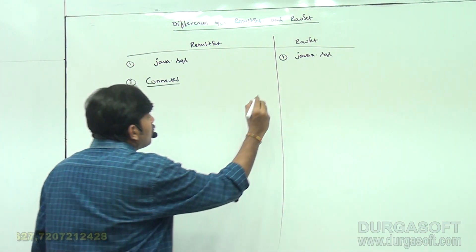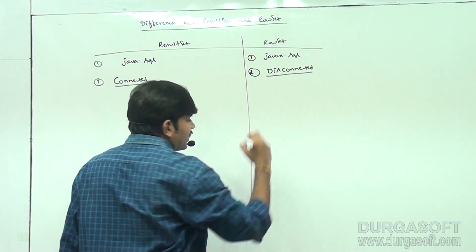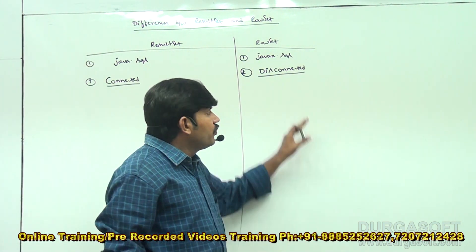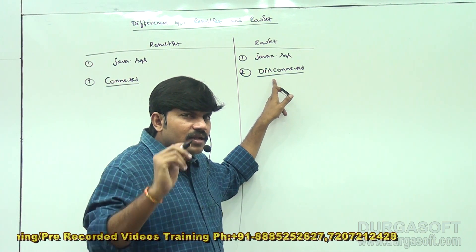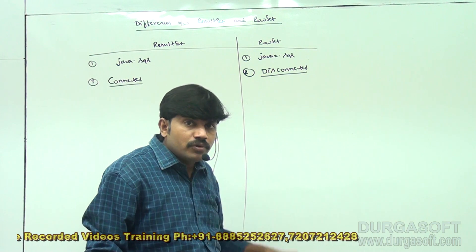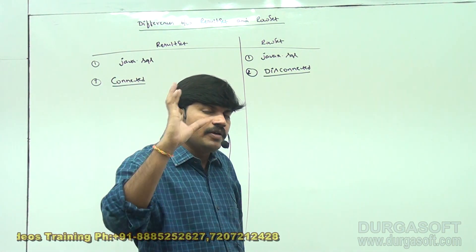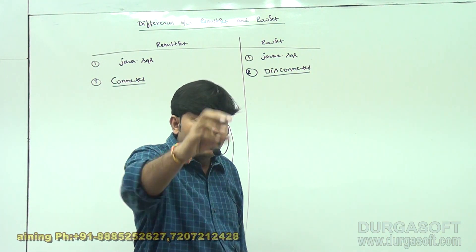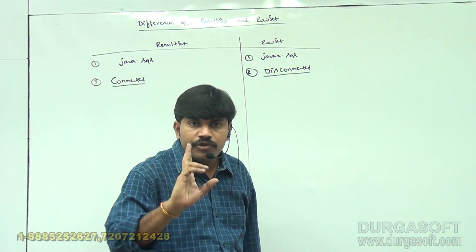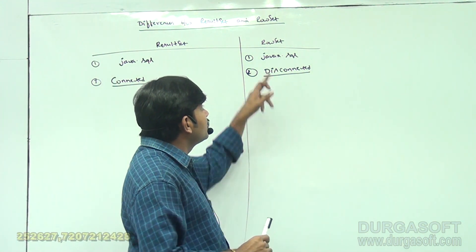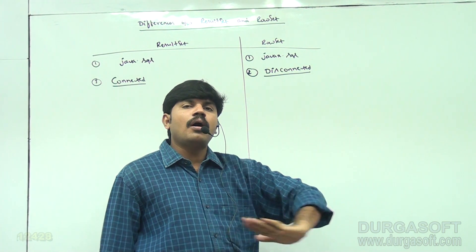By default, RowSet is disconnected. Without having a database connection, you are happily allowed to use RowSet. However, almost around five RowSets exist — except JdbcRowSet, all the remaining RowSets are disconnected. Only JdbcRowSet is by default connected. So except JdbcRowSet, all remaining RowSets are by default disconnected.